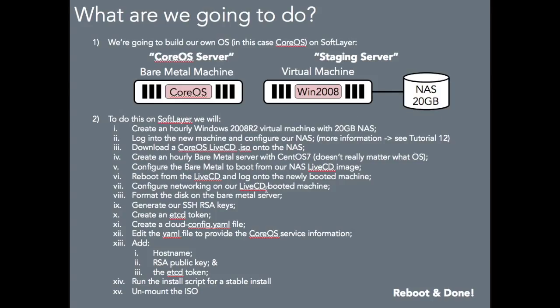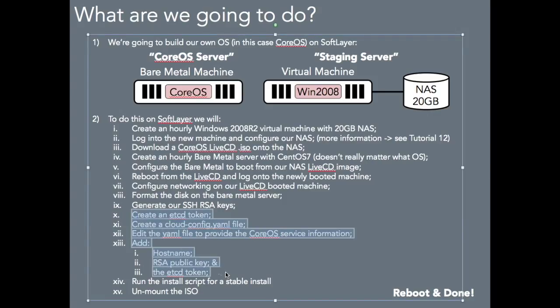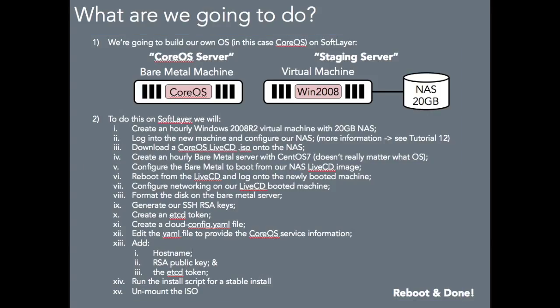Once that's up and running, we're going to configure the networking, then format the disk, generate the keys, and go through the steps to actually install CoreOS. Once we've installed it, we're going to unmount the ISO, and hey presto — we reboot and you're all done. We're going to log in and show that we now have a CoreOS server on IBM SoftLayer.